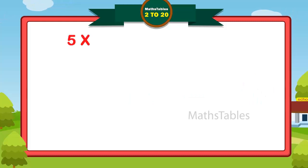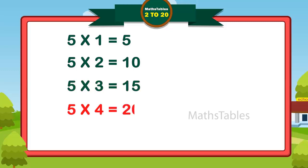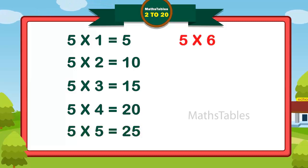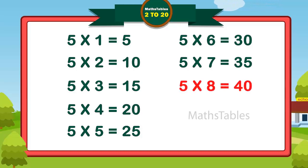Five ones are five. Five twos are ten. Five fours are twenty. Five fives are twenty-five. Five sevens are thirty-five. Five eights are forty. Five nines are forty-five. Five tens are fifty.